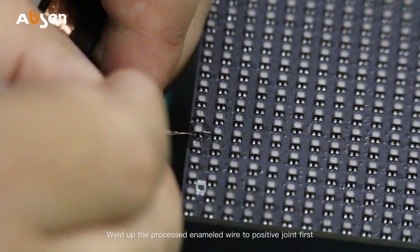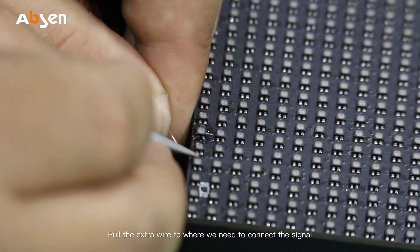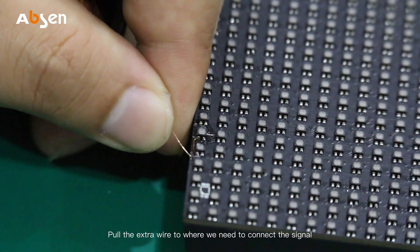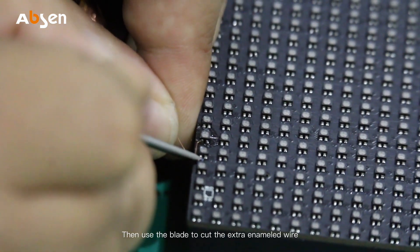Weld up the processed enameled wire to positive leg first. Pull the extra wire to where we need to connect the signal, make a corner, then use the blade to cut the extra enameled wire.